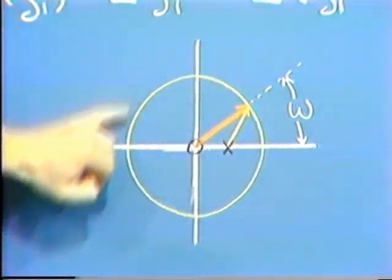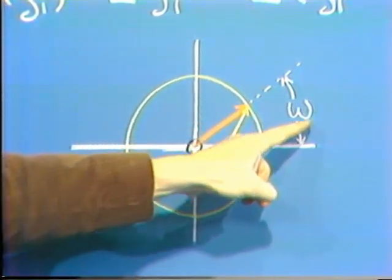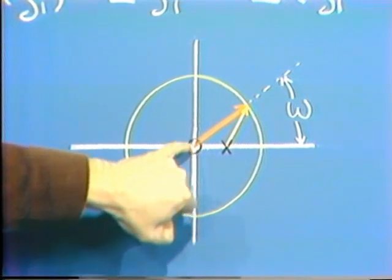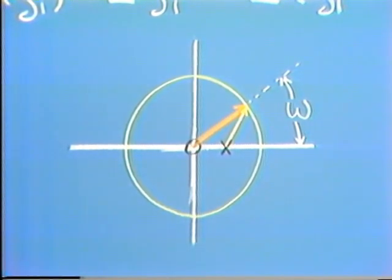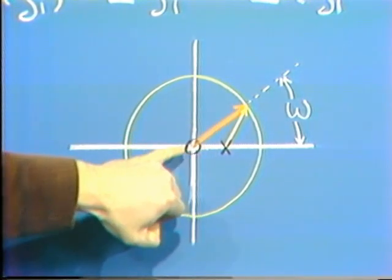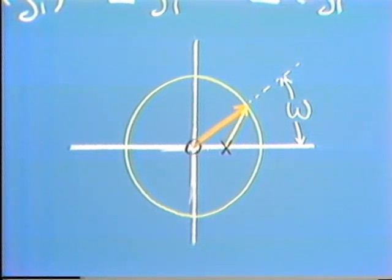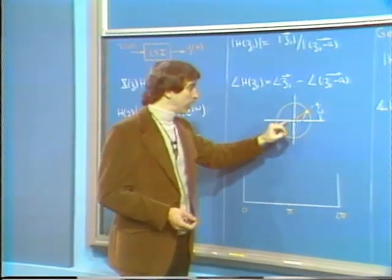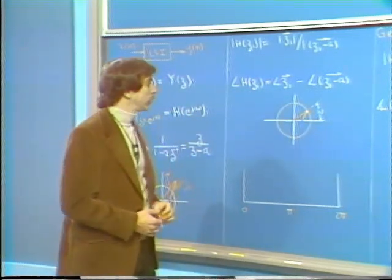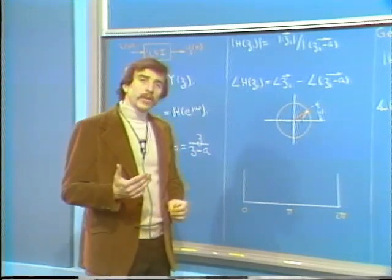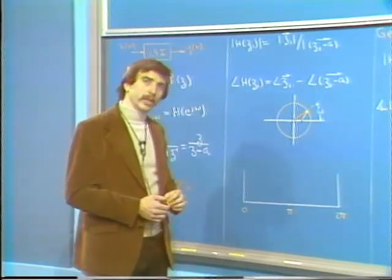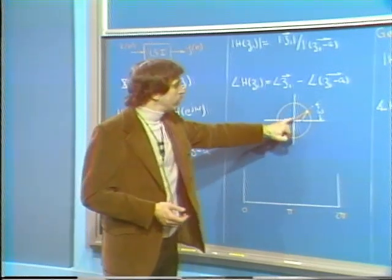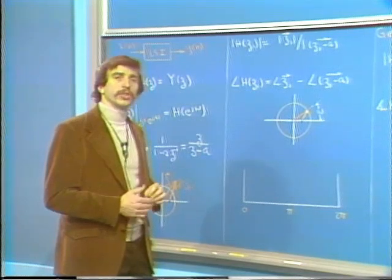The only effect of poles or zeros at the origin is on the phase of the frequency response. As we sweep around the unit circle, the angle of that vector simply equals the frequency value omega. So poles or zeros at the origin introduce a linear phase term and have no effect on the magnitude. It is therefore common, when looking at pole-zero patterns, to minimize or ignore poles or zeros at the origin.